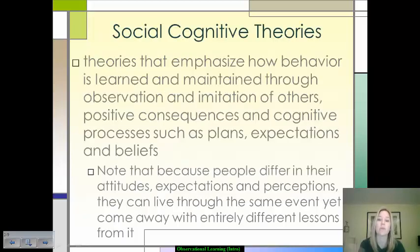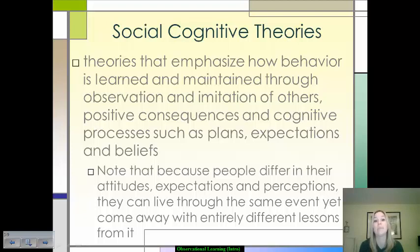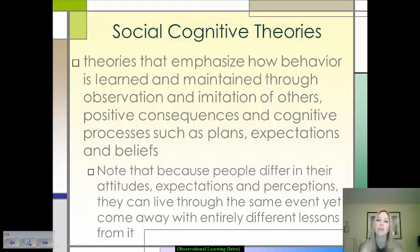But when we move into social cognitive theory and observational learning, that's something a little bit different. In social cognitive perspectives, the theory is that you look at how behavior is learned and maintained by watching what others do — especially the positive consequences that happen to them when they act on those behaviors — and the thought processes that factor into the actions themselves.